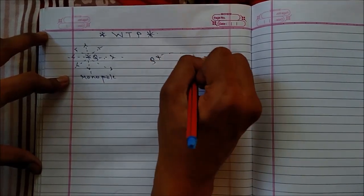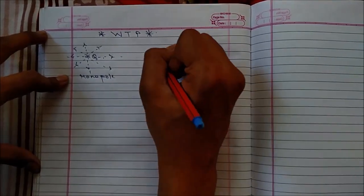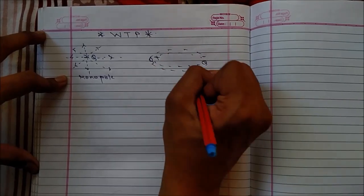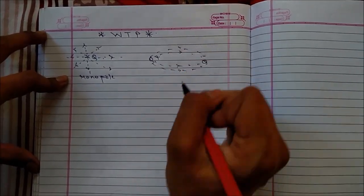This is a dipole. Electric flux density over here will move from positive to negative. This is electric flux density.